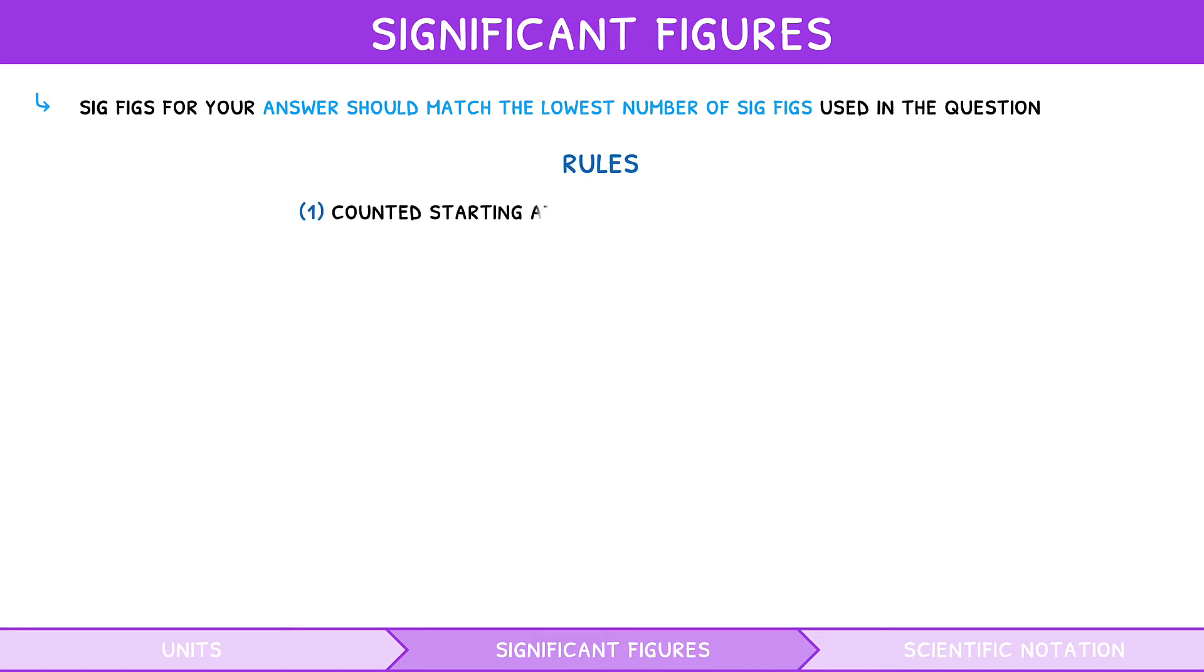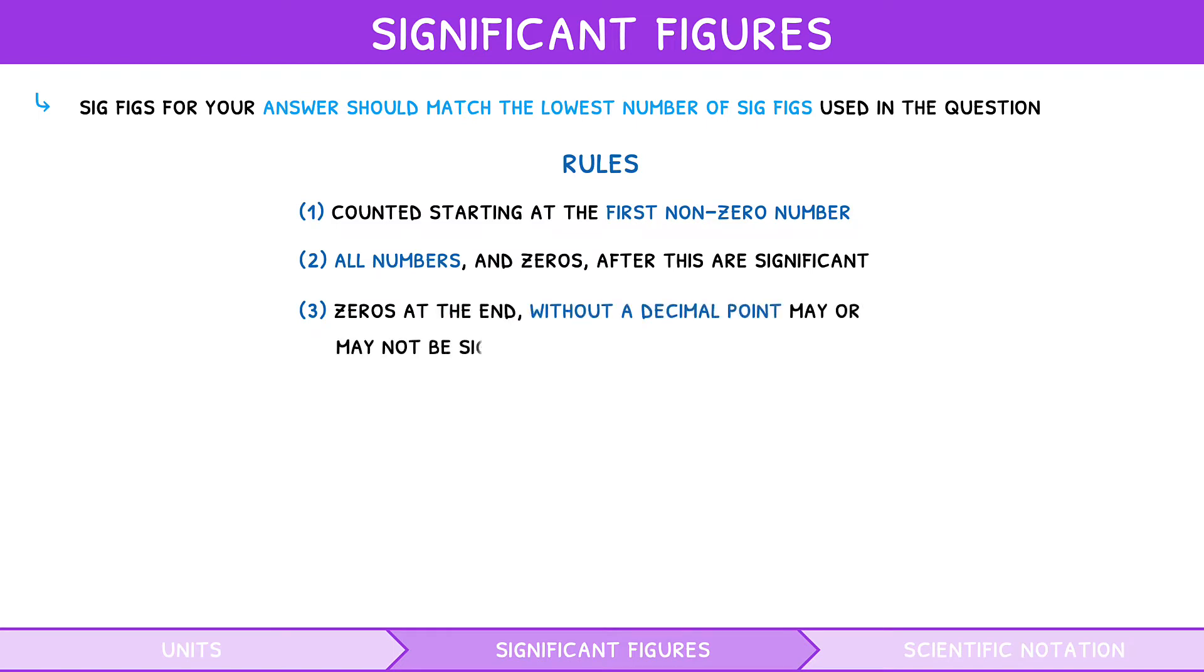Well, there are a few rules that you need to know to identify the number of sig figs in a number. Sig figs are counted starting at the first non-zero number. All numbers and zeros after this are significant. However, any zeros at the end of a number without a decimal point may or may not be significant. It gets complicated here, so we use scientific notation.